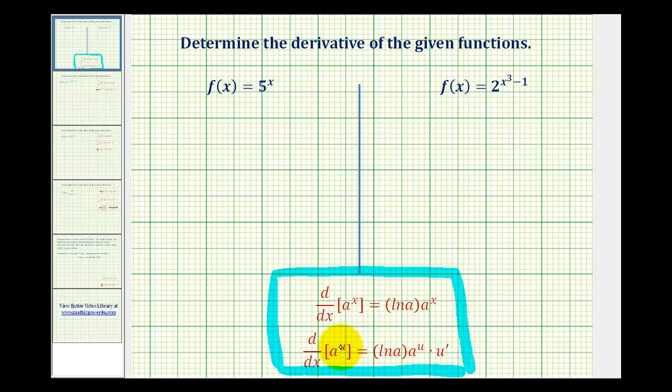But if we have a composite function where the exponent u is a function of x, the derivative of a to the u with respect to x is equal to natural log a times a to the u times u prime.